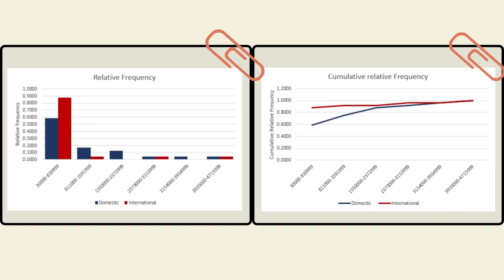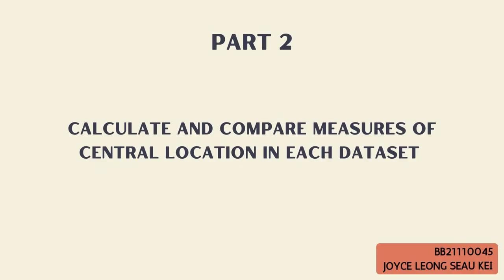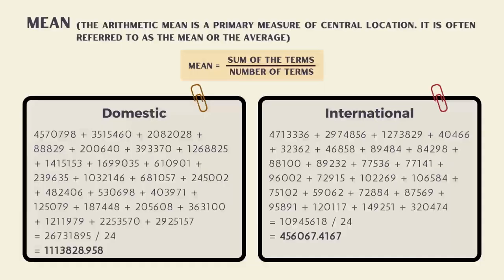Part 2: Calculate and compare measures of central location in each dataset. The arithmetic mean is a primary measure of central location, often referred to as the mean or the average. The formula for the mean is the sum of the terms divided by the number of terms.